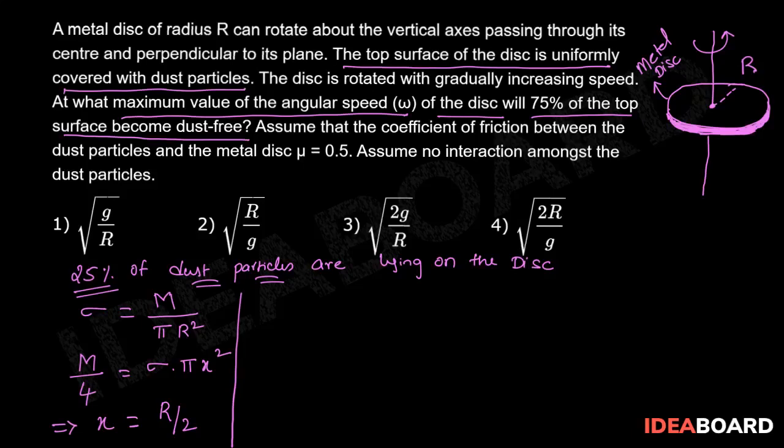Therefore, we can conclude that for all the particles whose distance from the axis of rotation is less than or equal to R upon 2 will lie on the surface of the disc and rotate along with the disc. The remaining 75% which is beyond R by 2 will fly off.